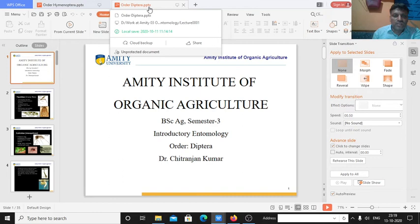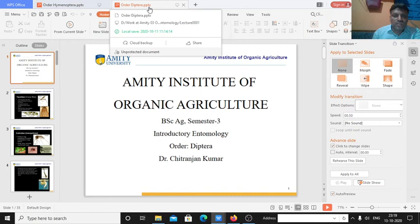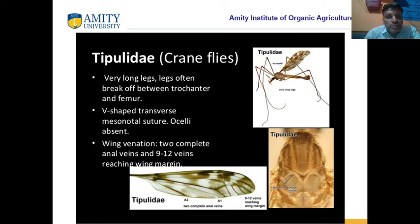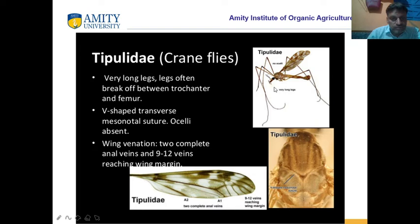Now we will discuss the order Diptera. These are different flies studied in Diptera: mosquitoes, flies, and house flies. The family Tipulidae has very long legs, mostly absent wing venation, two complete veins, and 9 to 12 veins reaching the wing margin.